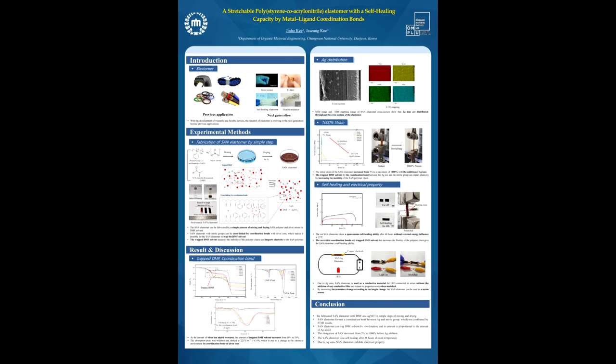We also measured FTIR to confirm the coordination bonds between the nitrile group and silver of SAN elastomer. The absorption peak was widened and shifted at 2237, which is due to the change in the chemical environment by coordination bonds of silver ion.